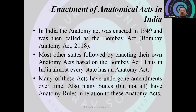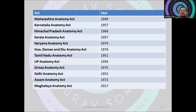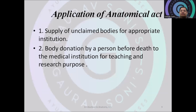In India, the Anatomy Act was enacted in 1949 and was called the Bombay Act. Most states have their own act as per their requirements, but most follow this particular act. For example, the Maharashtra Anatomy Act 1949, the Karnataka Anatomy Act 1957, and the Delhi Anatomy Act 1953. Likewise, all states of India now have their own anatomy acts. The primary use of the anatomy act is to supply unclaimed bodies to appropriate institutions and to facilitate voluntary body donation for research or study in medical colleges.